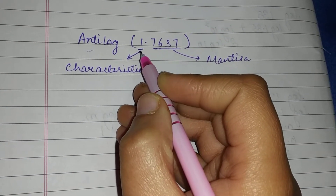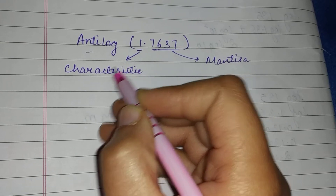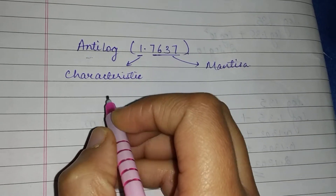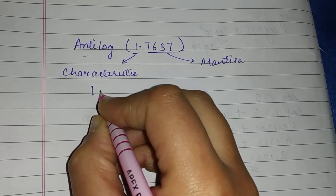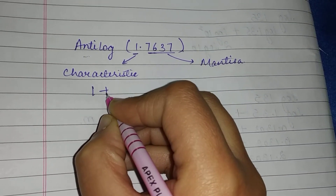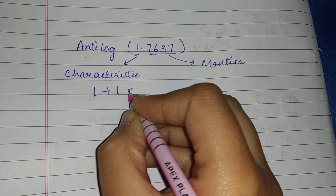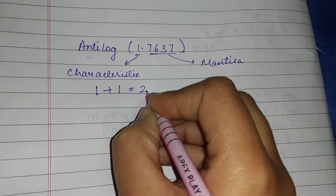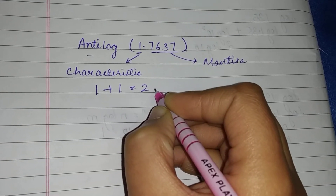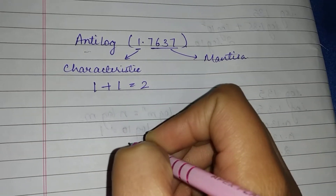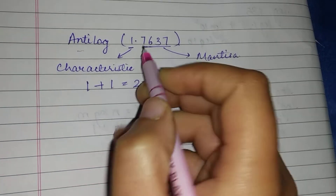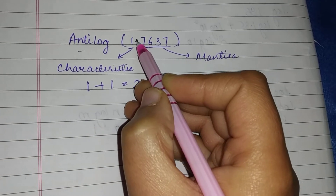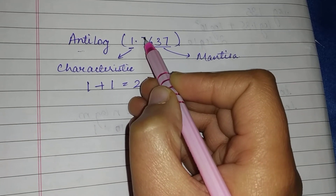To find the antilog, we take the characteristic value, which is one, and add one more to get two. This two will be used to place the decimal point in the final answer.